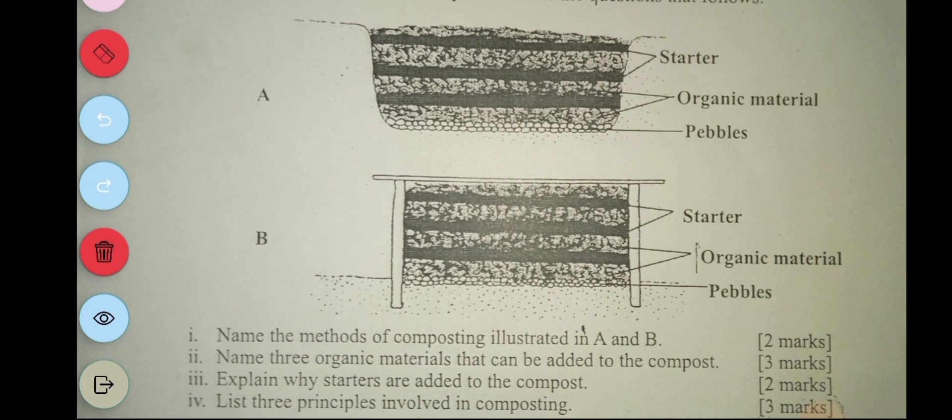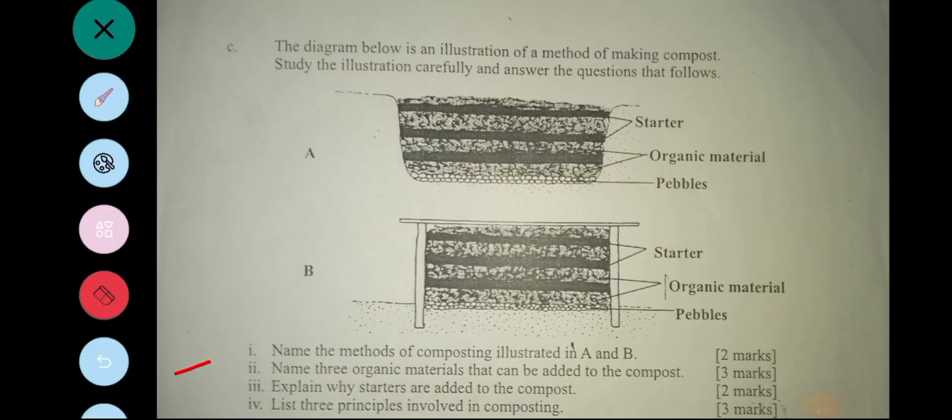Then the next question says: name three organic materials that can be added to the compost. Leaves, grass clippings, and then vegetable scraps.